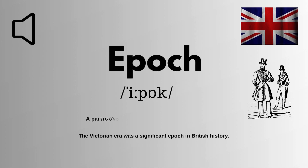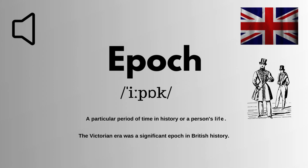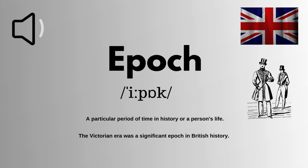We are looking at how to pronounce this word correctly in English. It is spelled as E-P-O-C-H. The correct pronunciation of this word is epoch. Epoch means a particular period of time in history or a person's life.